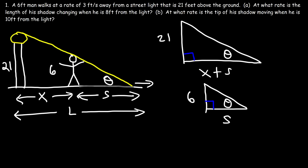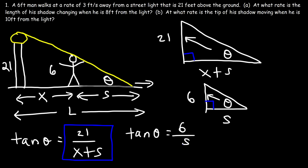Now according to SOHCAHTOA, hopefully you know your trig. Tangent theta of the first triangle, that is this one, it's equal to the opposite side, which is 21, divided by X plus S. Now tangent theta of the second triangle, it's also equal to opposite over adjacent. So therefore, we could set 21 over X plus S, and set that equal to 6 over S.